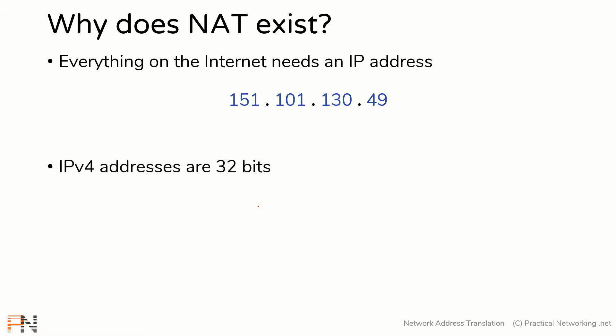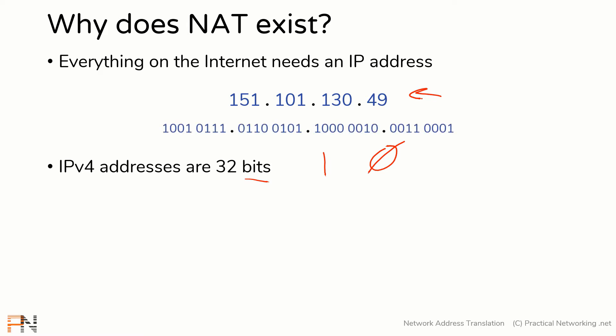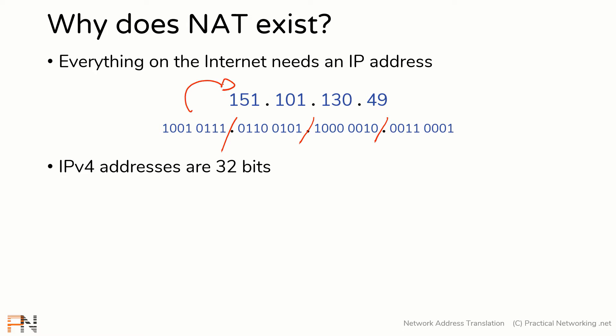An IP address is 32 bits. A bit is simply a digit that can be a 1 or a 0. So when we say an IP address looks like this, what it actually looks like to a computer is 32 combinations of 1s and 0s, which we break up into chunks of 8 — called an octet — and convert into decimal numbers to make it easier for humans who don't speak binary.